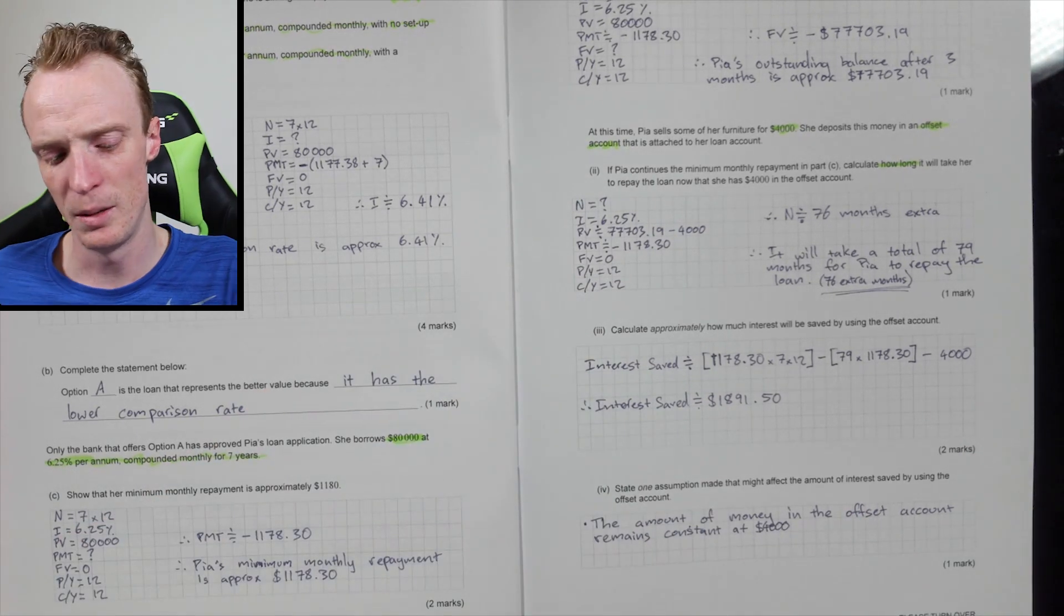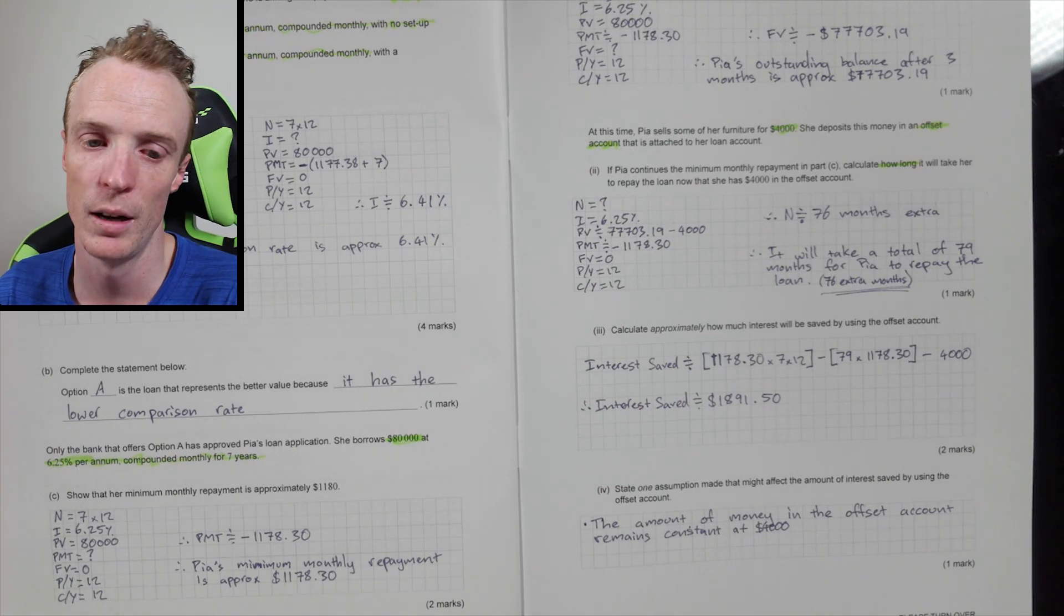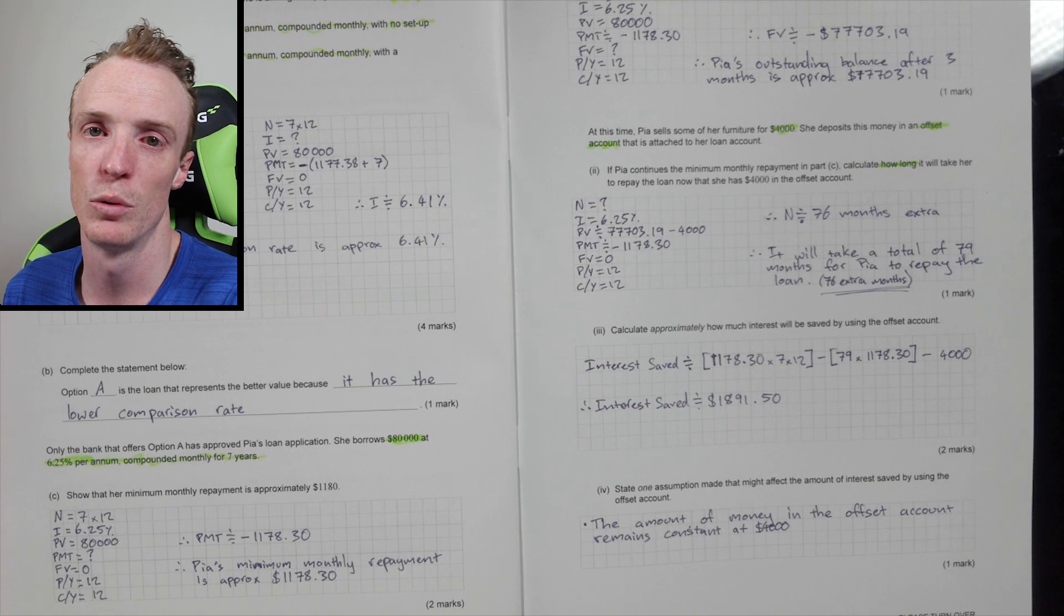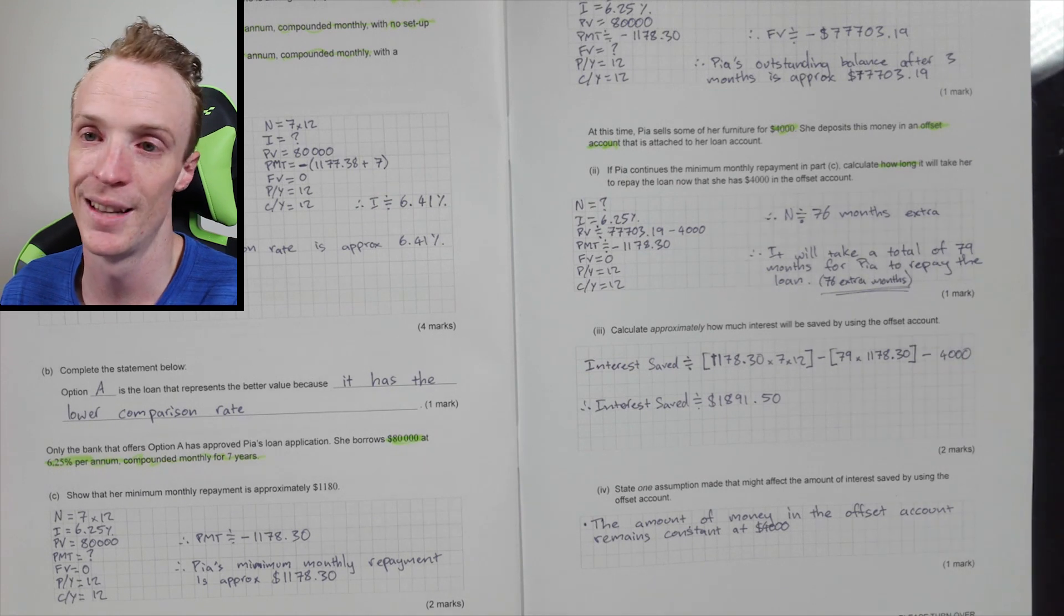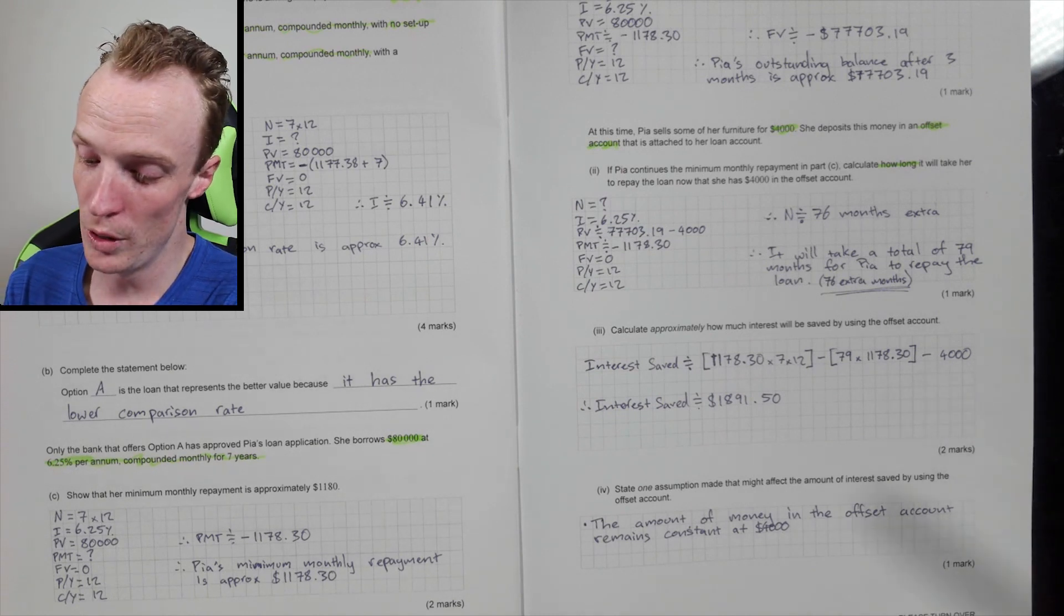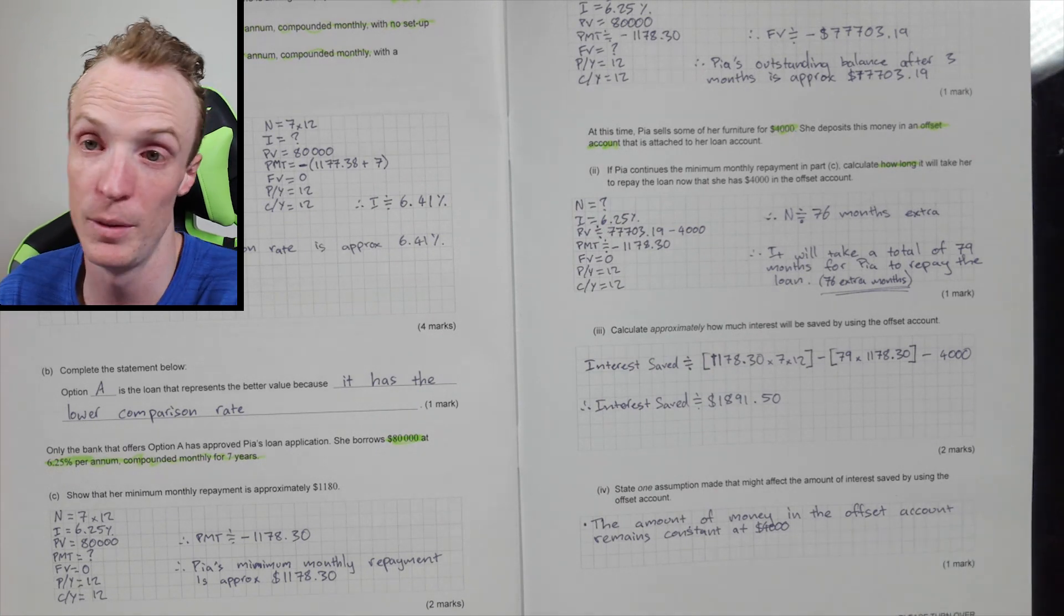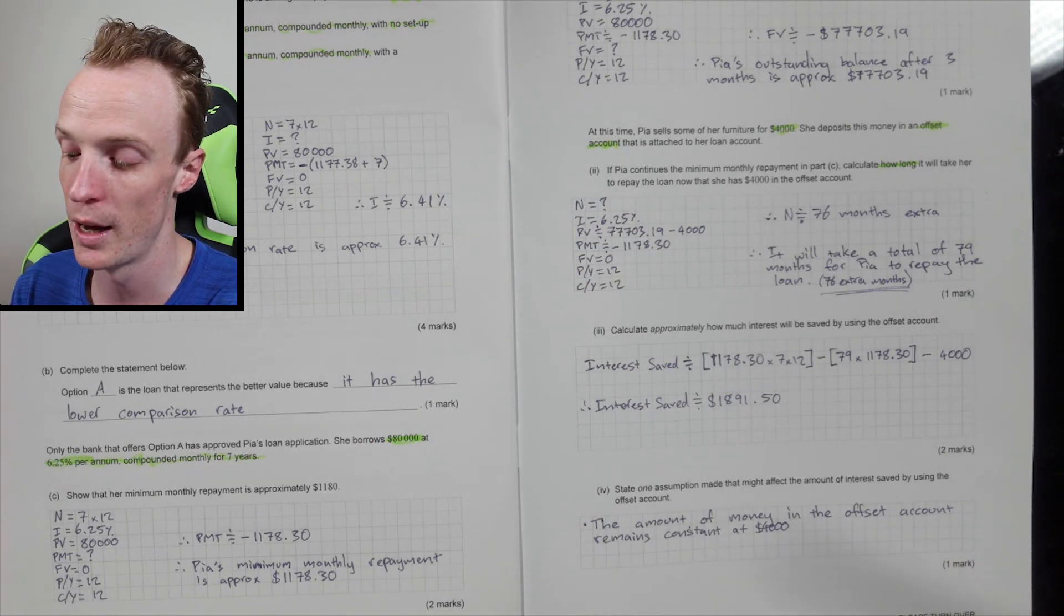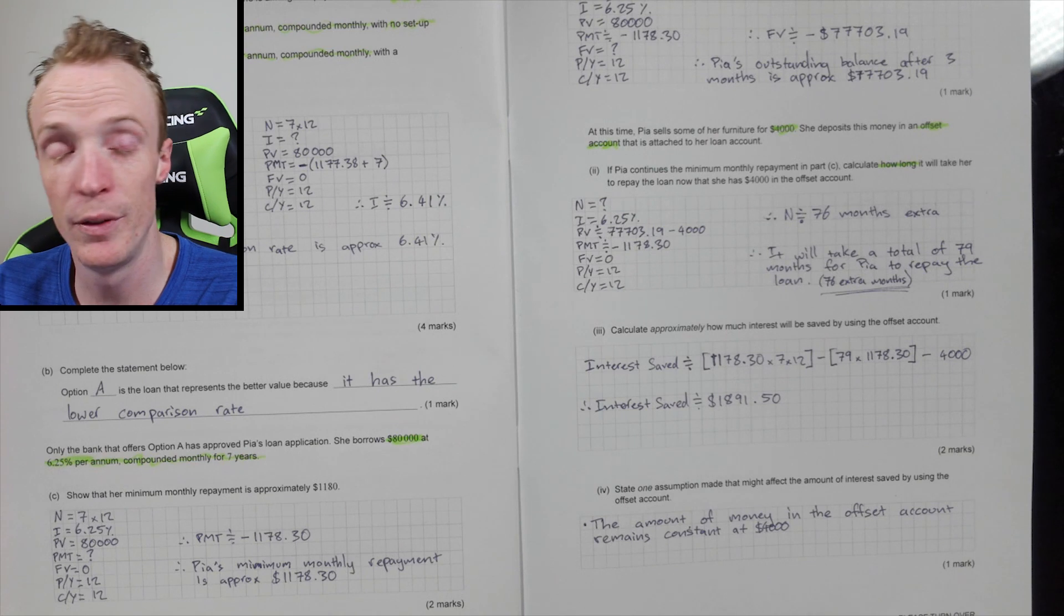You might discuss the effects of it if you've got time in the exam as well, about what happens if it doesn't remain at that. But things that you could also consider that are probably easy enough to talk about is a lot of offset accounts have fees and stuff attached to them. So we're assuming that this offset account doesn't have any fees here, which will affect things. The other thing that offset accounts do have, not all offset accounts have a 100% offset to them. So sometimes they might only have a 50% offset or something like that, but we're assuming that the whole $4,000, a hundred percent of that is being offset from the actual account itself. Alright. Other than that, that's the end of the exam.